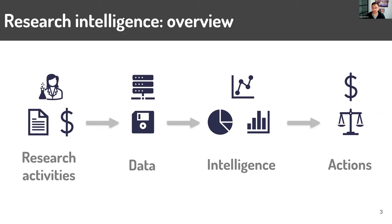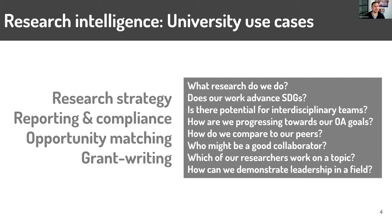At the institutional level, when you're talking to a vice president of research, president, or executive, this ends up focusing on a few buckets: research strategy, reporting and compliance (mainly for funders but also the public), opportunity matching — making sure the right grant gets to the right researcher or the right donor knows about the right researcher — and then grant writing. Some common questions asked with research intelligence include: what research do we do, are we progressing on our open access goals, and which of our researchers work on a specific topic.